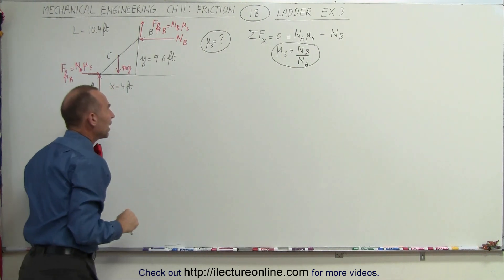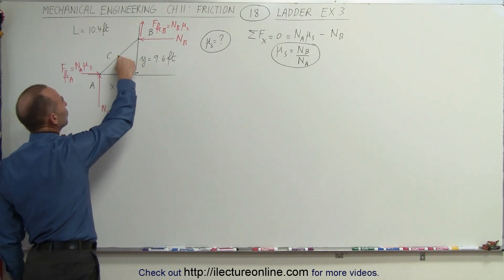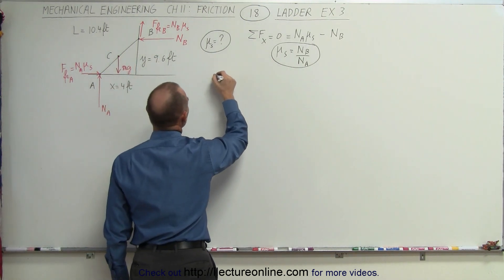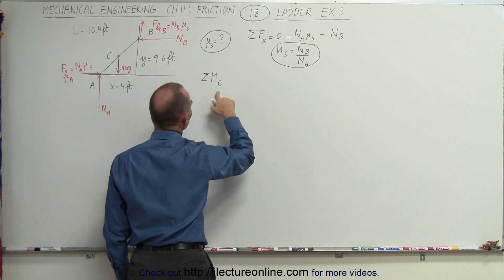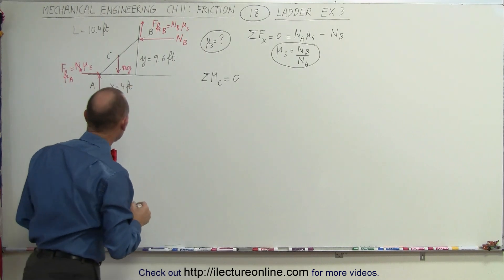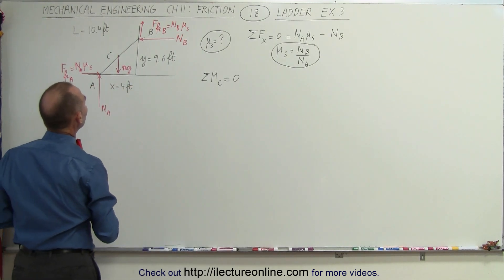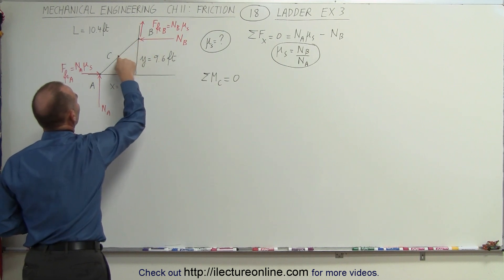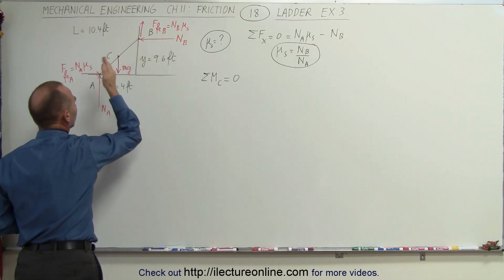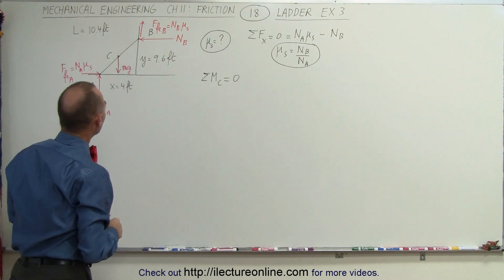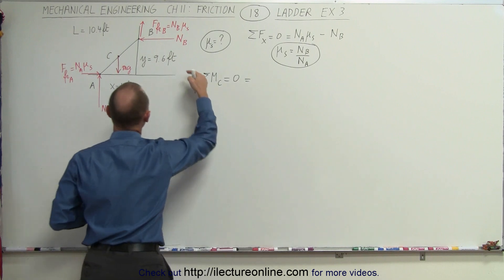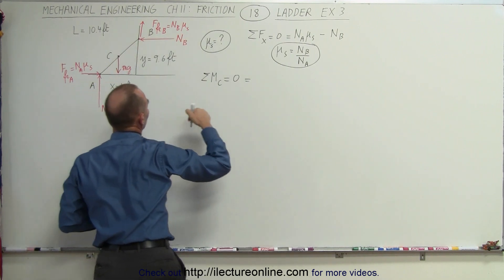Next, we find the moment about point C. The sum of all moments about C must equal zero. We have quite a few forces contributing moments — we don't need to worry about mg because it passes right through point C.